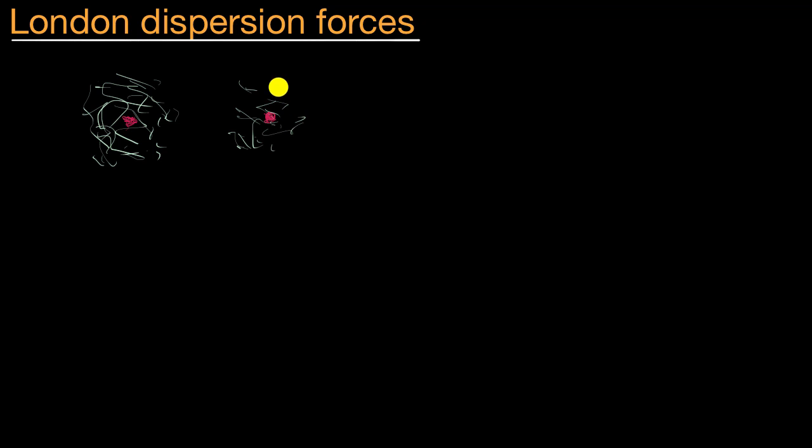If these are both neutral in charge, how would they be attracted to each other? That's what London dispersion forces actually explain, because we have observed that even neutral atoms and molecules can get attracted to each other. The way to think about it is, electrons are constantly jumping around probabilistically in this probability density cloud. They're not always going to be evenly distributed. You can imagine there is a moment where that left atom might look like this, where slightly more of the electrons are spending time on the left side than on the right side.